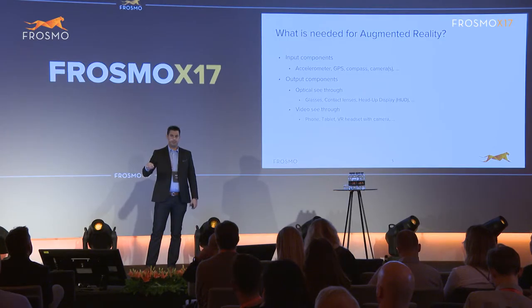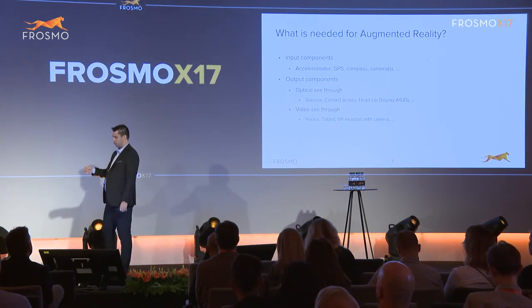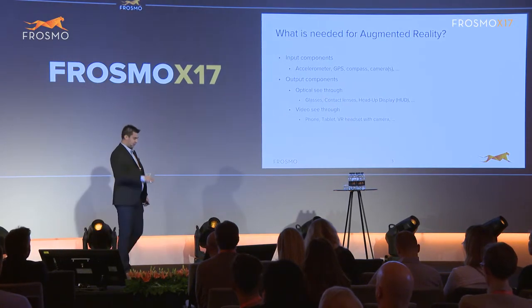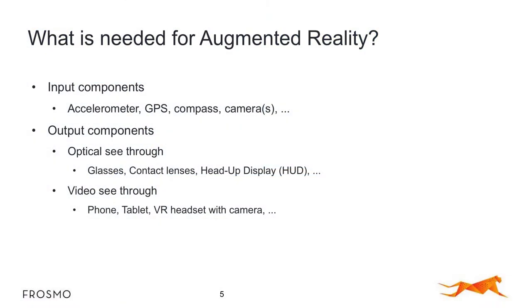Some of you already tried our applications yesterday and some of you will try today. The first group is video see-through — it means that the world is first recorded for you and in real time it is shown to you on the actual device display, but you cannot see through the device. And then there is optical see-through — you will see through the device. It is some kind of glass that you have on your head and it is completely transparent, plus it is showing augmentation for you in this glass.